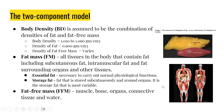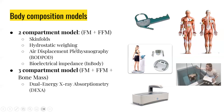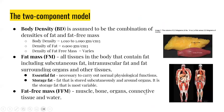The following assessment tools — skin folds, hydrostatic weighing, and so forth — utilize the two-compartment model, meaning they are categorizing body composition into fat mass and fat-free mass. Fat mass is all tissues in the body that contain fat, including subcutaneous fat, intramuscular fat, and fat surrounding organs and other tissues. We can further categorize this into essential fat and storage fat. Essential fat is necessary to carry out normal physiological functions, whereas storage fat is fat stored subcutaneously and around organs.